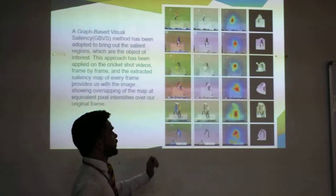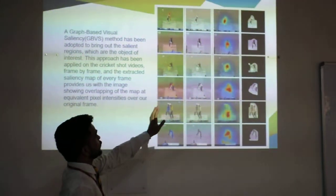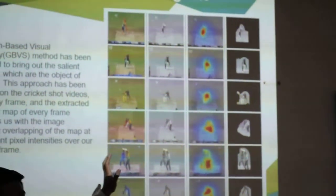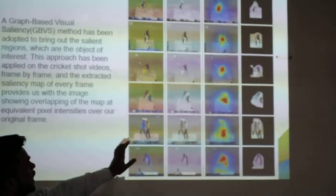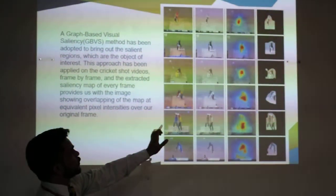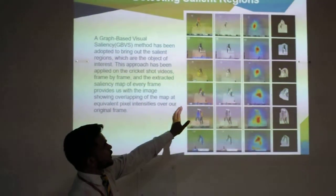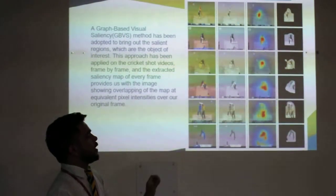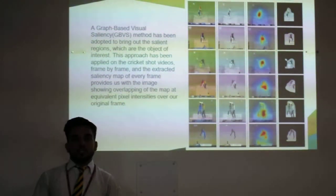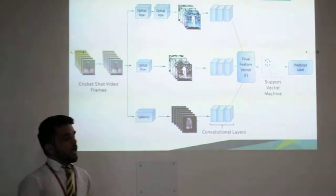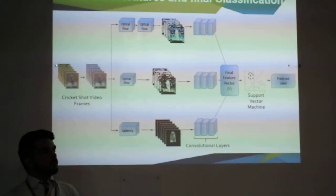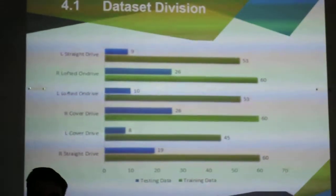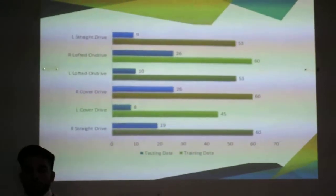We can see that over here there are different types of work. First of all, we have changed that frame into grayscale. Then we have taken the salient part only — the salient part is the bat where the bat is moving — so we have done this with the use of saliency detection. Then after that we have blacked out the whole region and taken only the batsman. After that we have applied various techniques, for example convolutional neural network and AlexNet with optical flow. After doing that, we have trained and tested features on SVM and applied the accuracy.